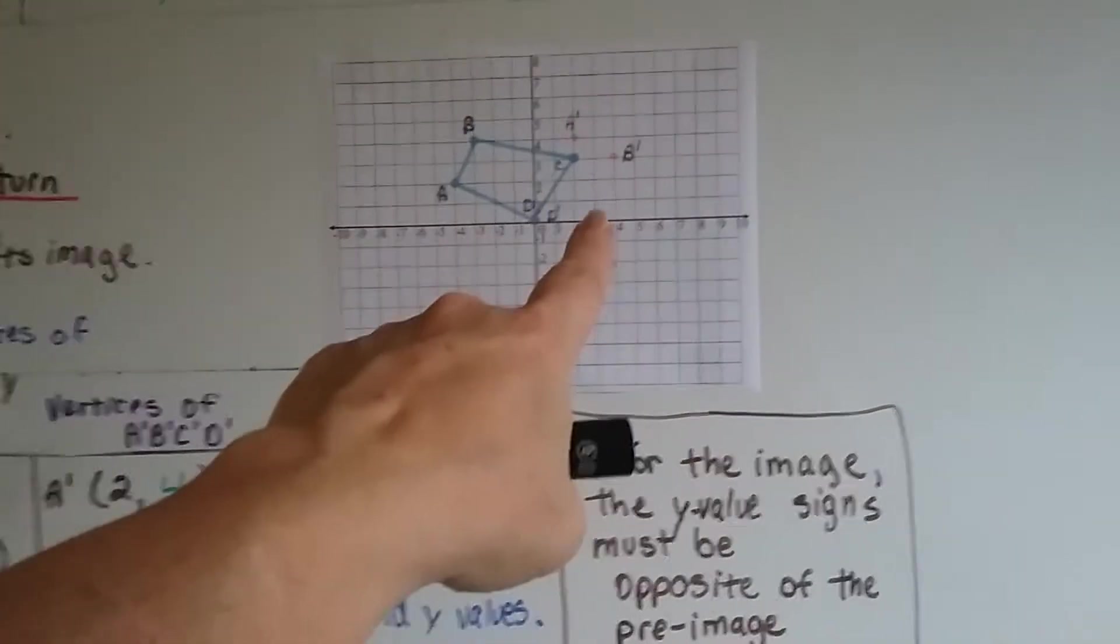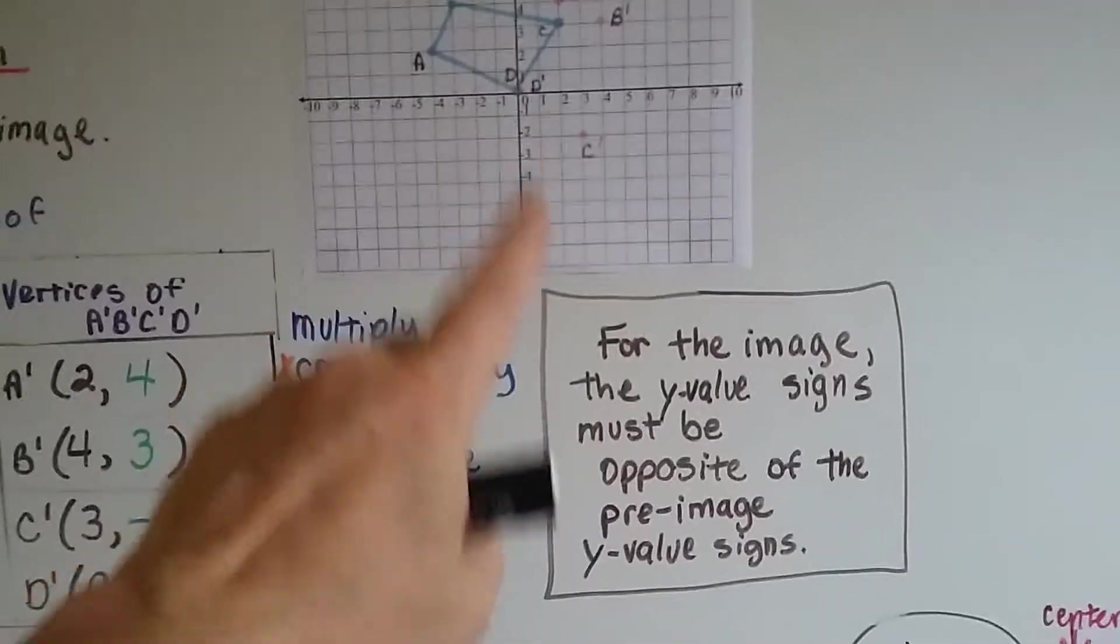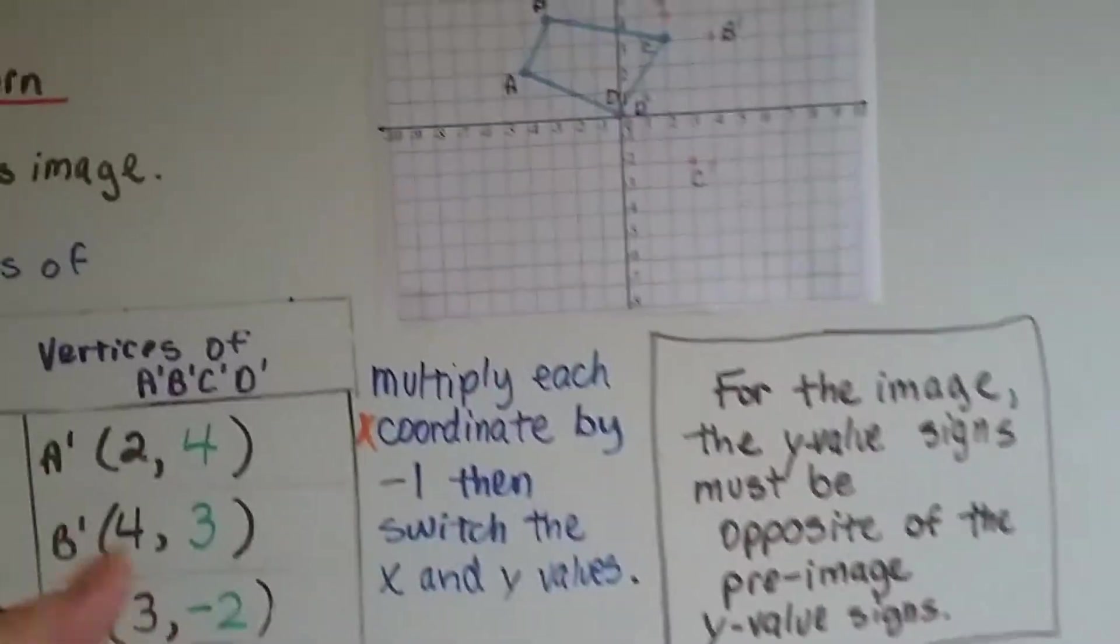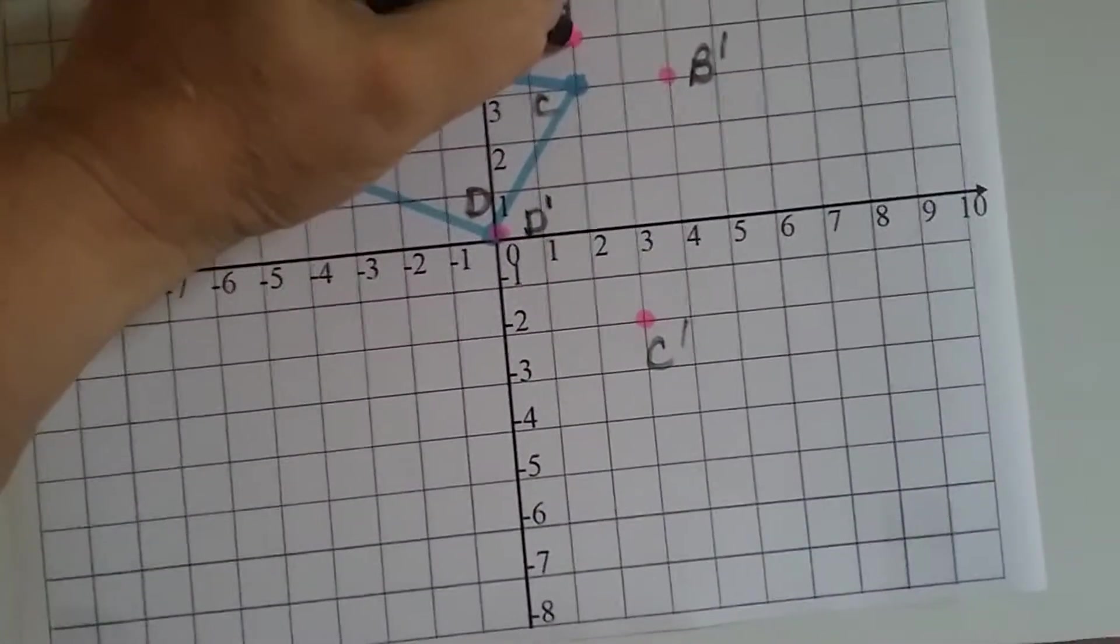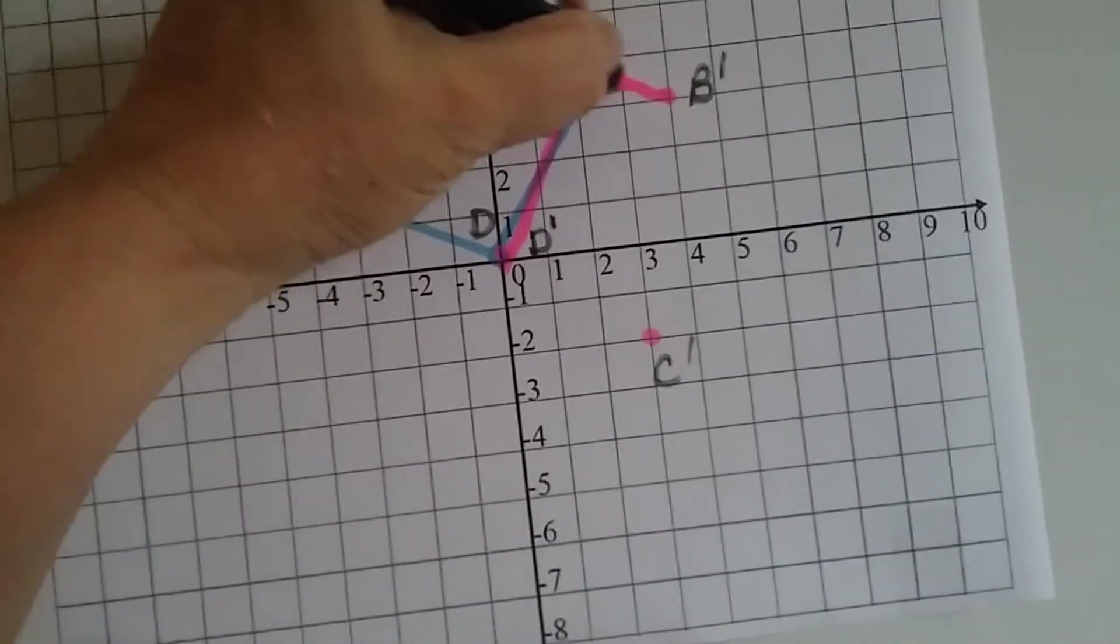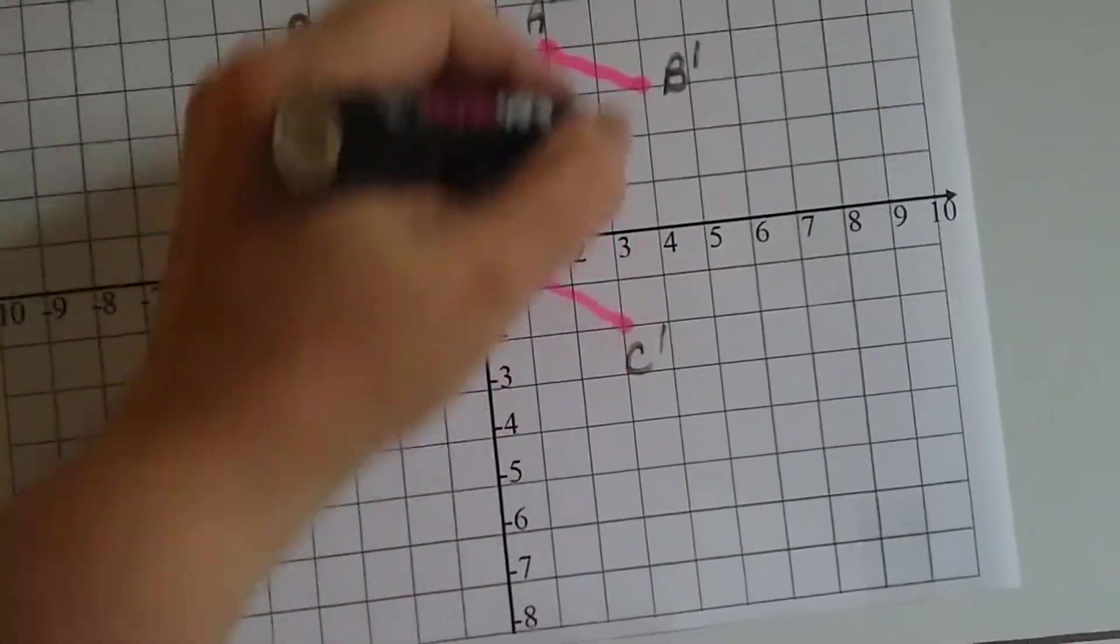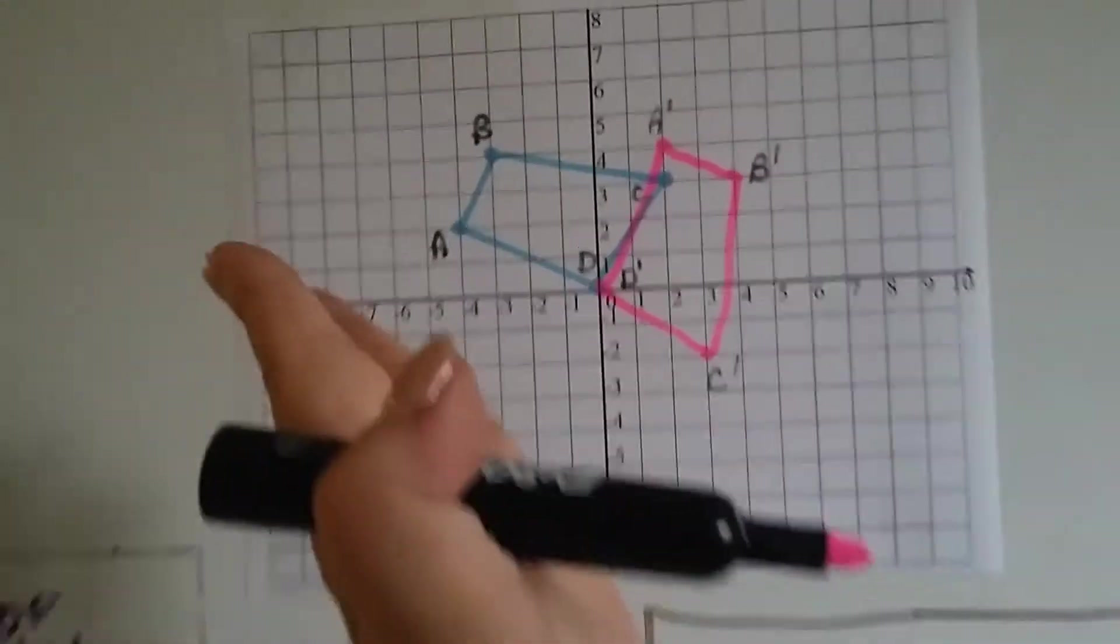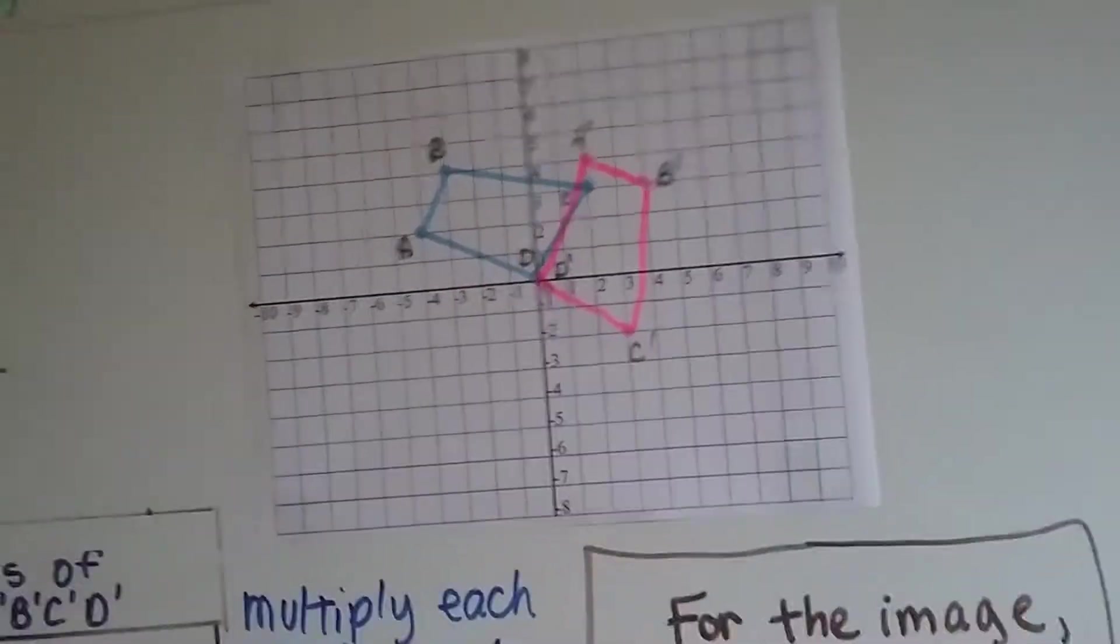So for our image, our pink image, the y value signs are opposite the pre-image y value signs. All we've got to do is connect the lines, and we've got our new quadrilateral. And it rotated 90 degrees around.